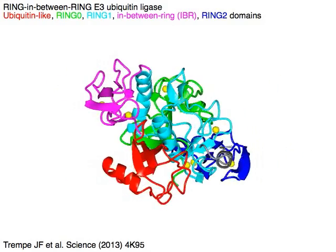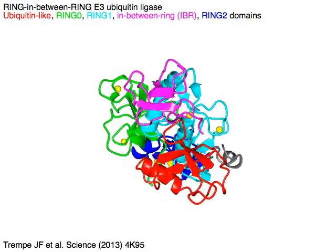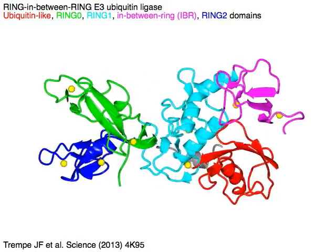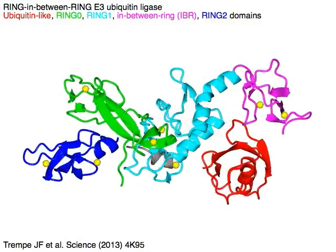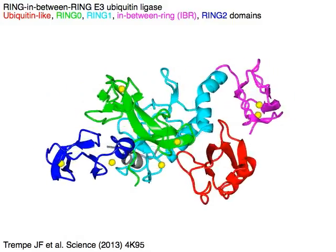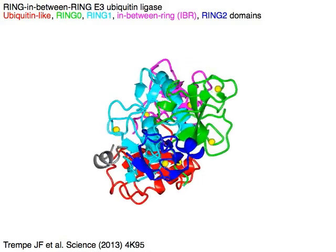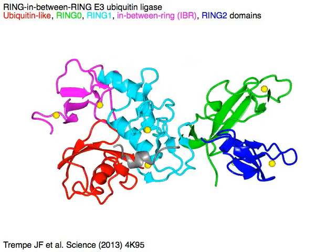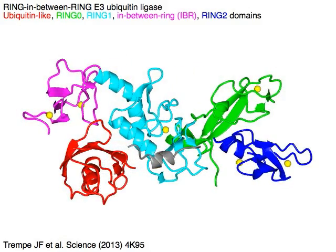It consists of an ubiquitin-like domain in red, ring 0 domain in green, ring 1 domain in cyan, in-between ring or IBR domain in magenta, and ring 2 domain in blue.